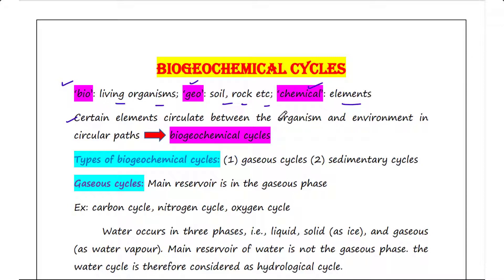Certain elements circulate between the organism and environment in circular paths that is referred to as biogeochemical cycles. The elements on earth are conserved, right? All elements on earth are conserved.